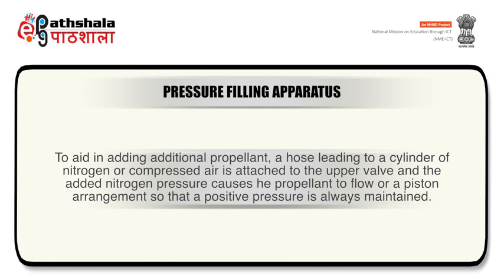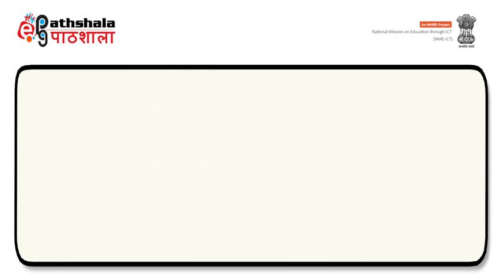To help in adding additional propellant, a hose leading to a cylinder of nitrogen or compressed air is attached to the upper valve, and the added nitrogen pressure causes the propellant to flow. Or a piston arrangement is made so that a positive pressure is always maintained.